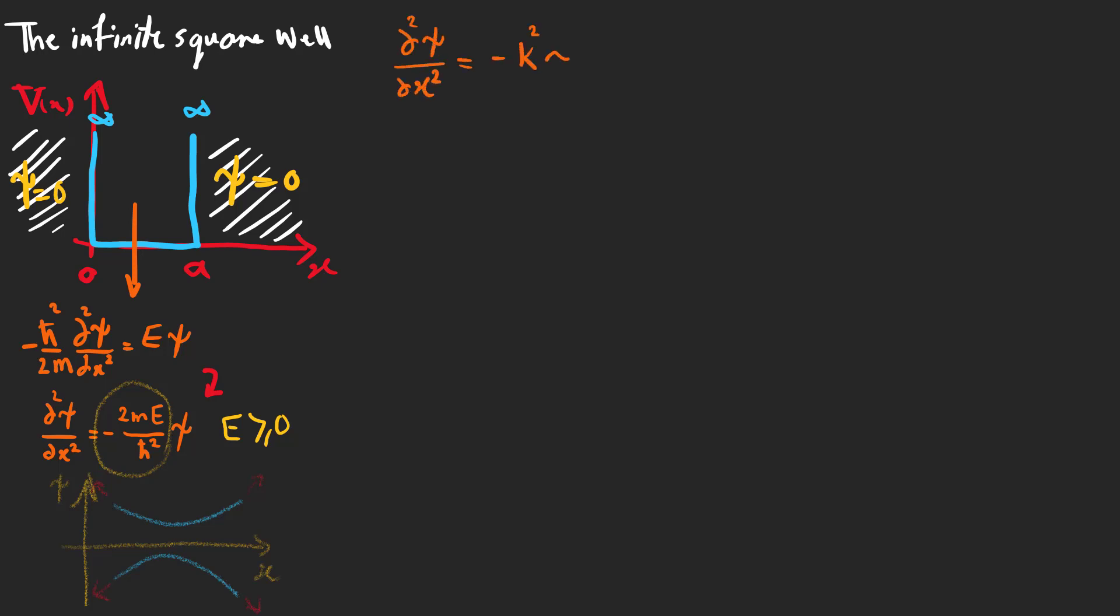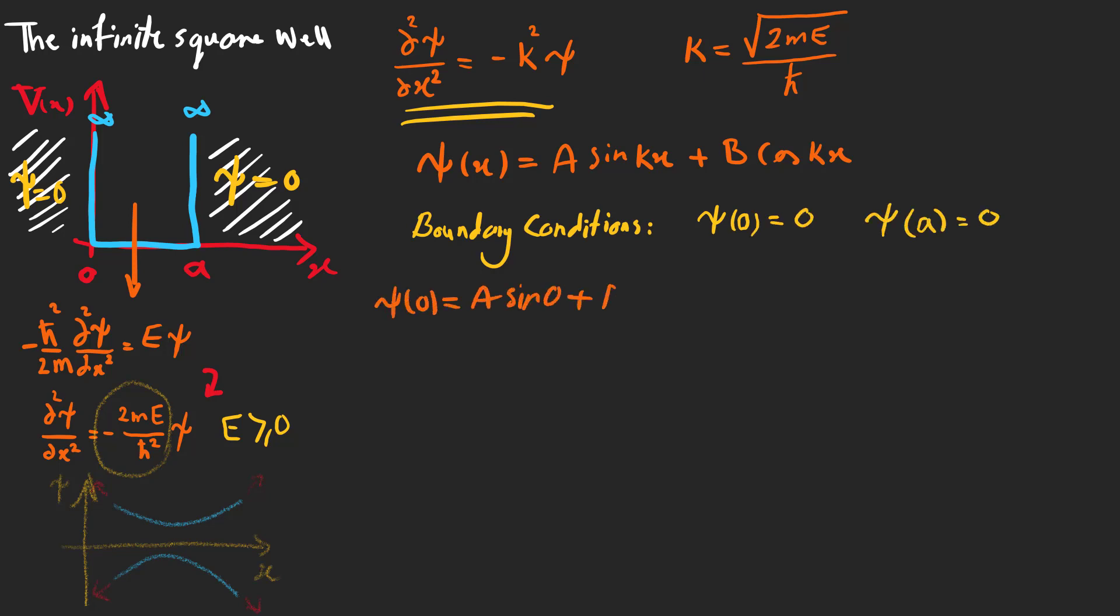Let's rewrite this equation using k squared as the coefficient. It's like a simple harmonic oscillator in classical mechanics and the answer is a combination of sine and cosine. Now let's check the boundary conditions to find A and B. Based on the first condition we find out that B is 0, so the cosine term vanishes.